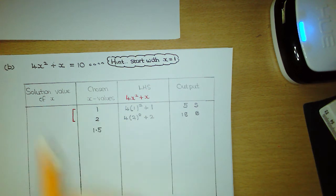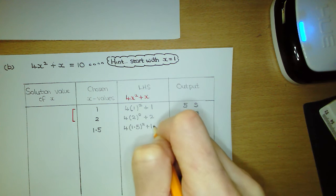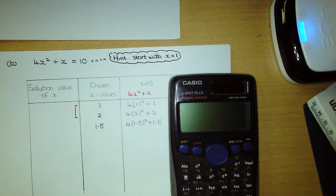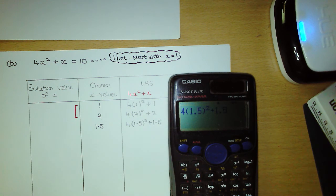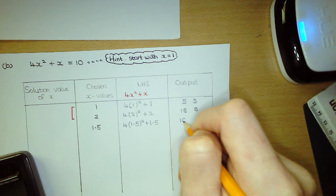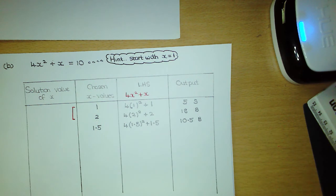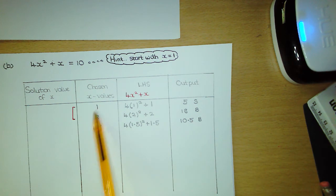We're going to substitute 1.5 into the left hand side. Go to your calculator and type it in carefully — that's going to give 21 over 2; hit the SD button and that gives us 10.5. Now 10.5 is just slightly bigger than the target number, so we have to re-evaluate the gap. When we substituted 1, the output was smaller; when we substituted 2, it was bigger; but now with 1.5 the output is bigger. So the gap is no longer between 1 and 2 — it's now between 1 and 1.5.